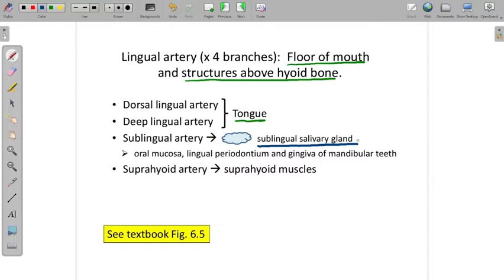you will have to go up to either the brachiocephalic artery on the right side or the left common carotid on the left side to get to the external carotid. Then you would go to the lingual artery and then the sublingual artery to the sublingual salivary gland. The sublingual artery also supplies the oral mucosa and the lingual periodontium and gingiva of the mandibular teeth.